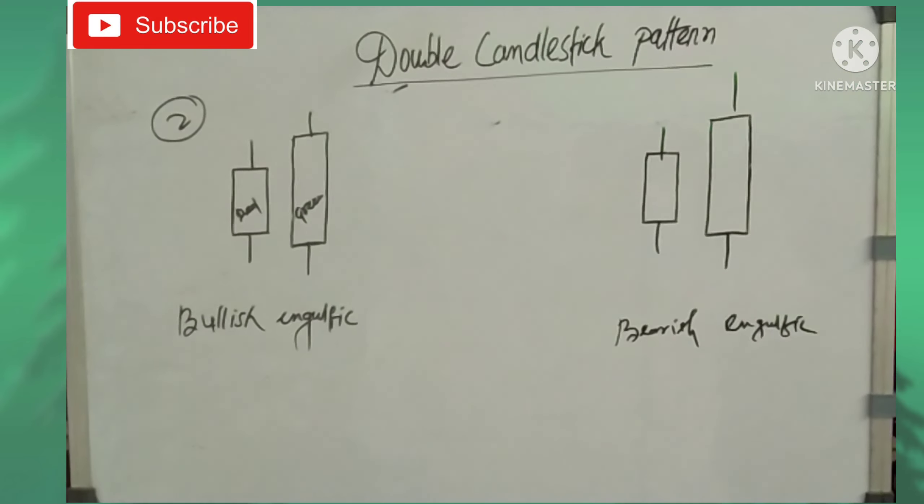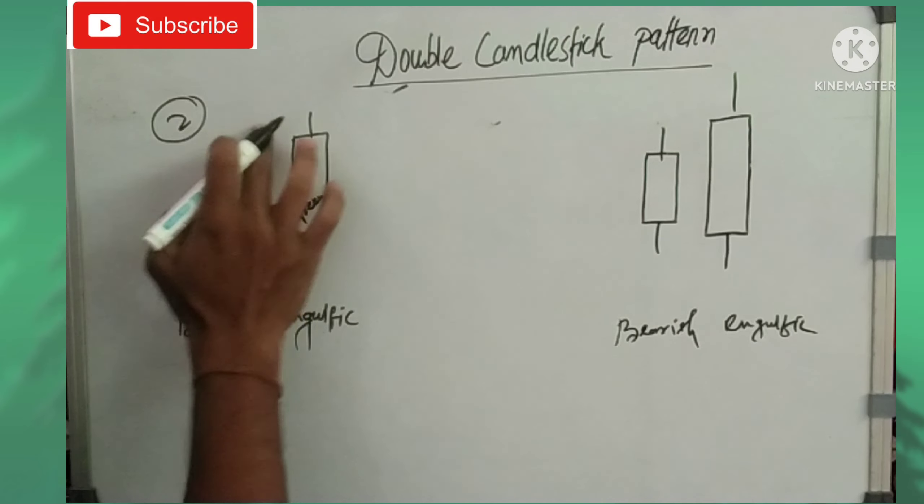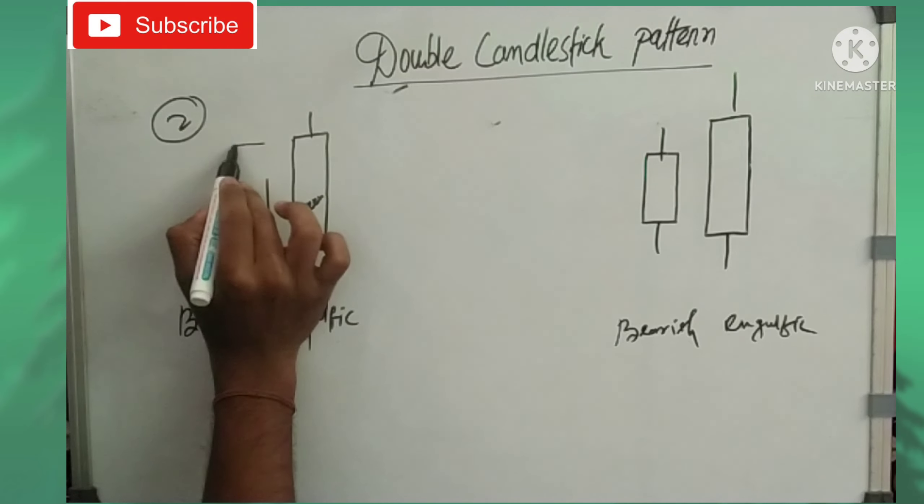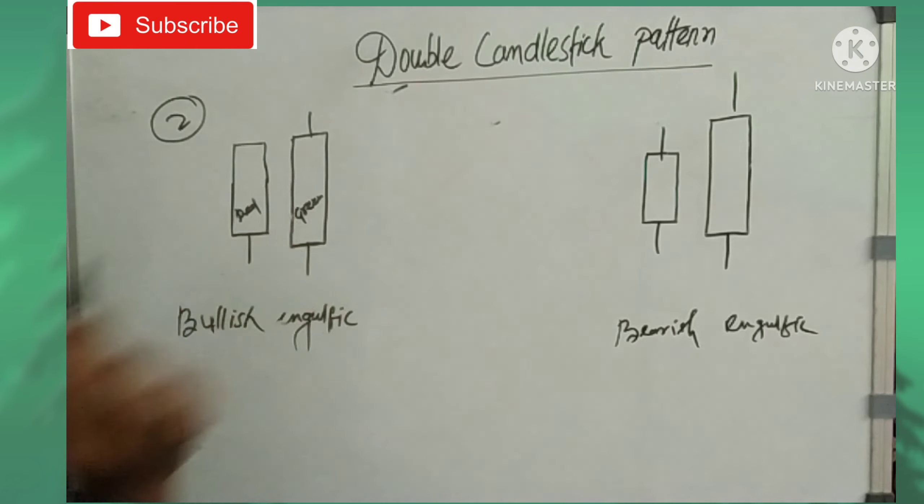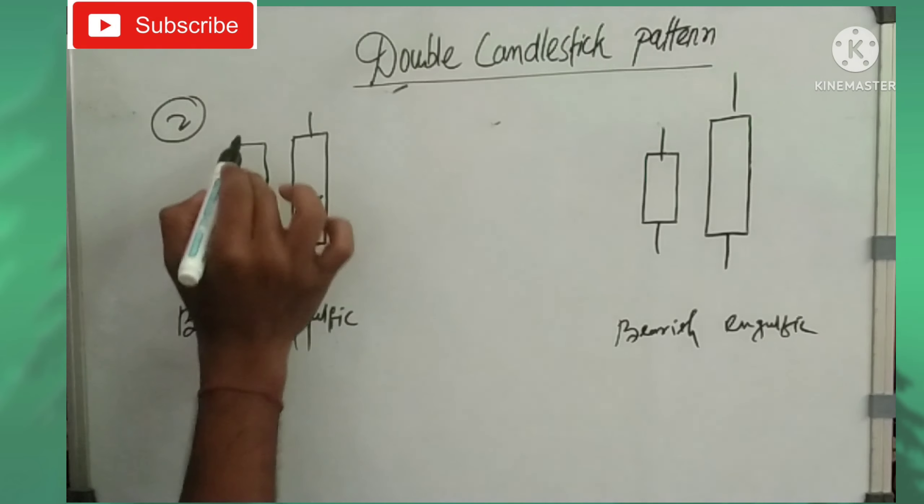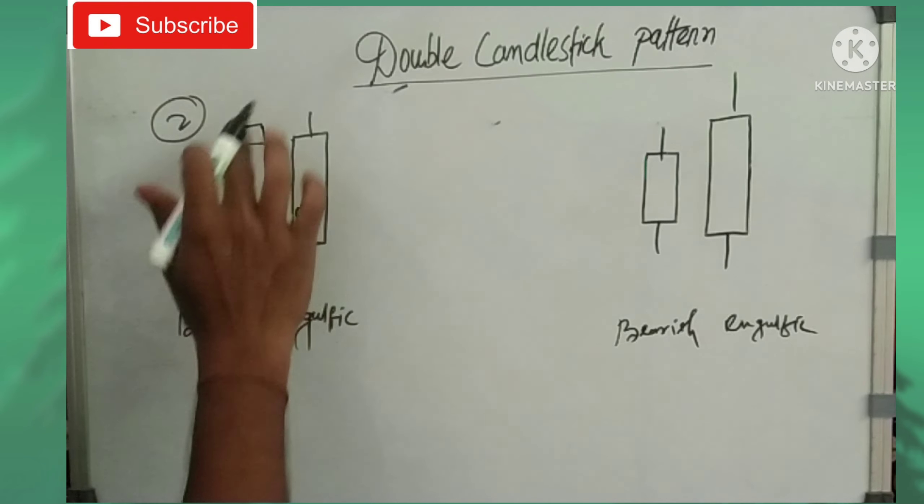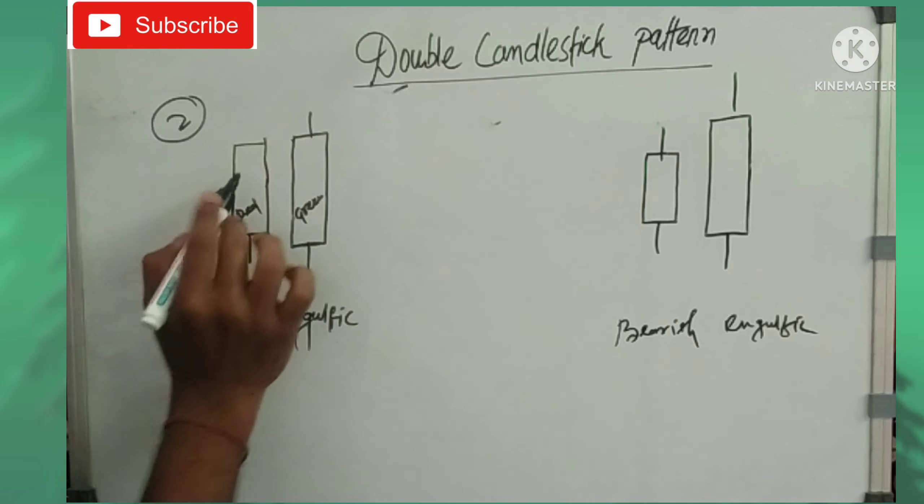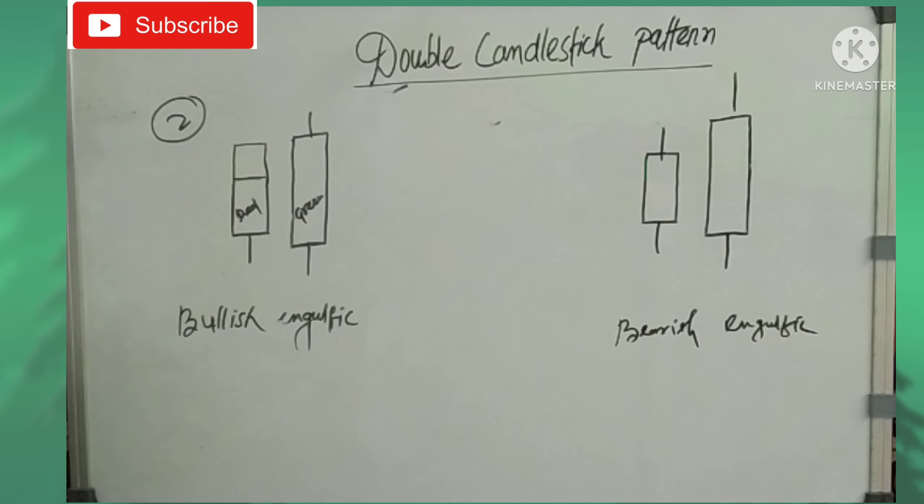The next pattern is bullish engulfing and bearish engulfing. In bullish engulfing, a large green candle completely engulfs the previous red candle. In bearish engulfing, a large red candle engulfs the previous green candle.